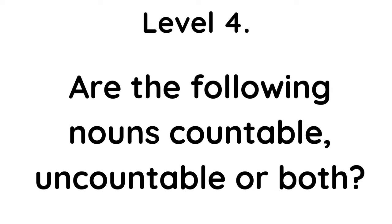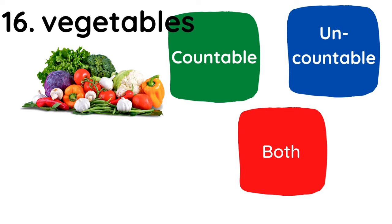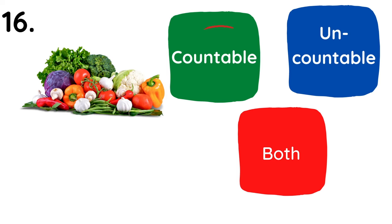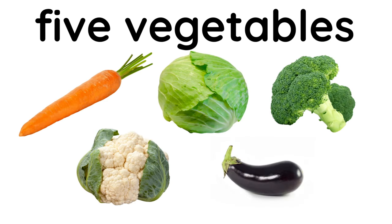Level four. Are the following nouns countable, uncountable or both? Number sixteen. Vegetables. Countable. Five vegetables.